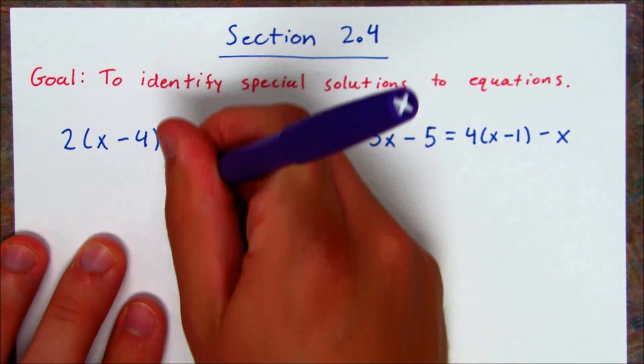Here I have two equations, and I'm going to use my trusty foldable to solve these two equations. Let's start with the one on the left. Following my foldable, it says the first thing to do is distribute. So I'm going to distribute my 2. So I get 2x minus 8 equals 2x minus 8.